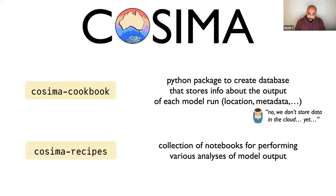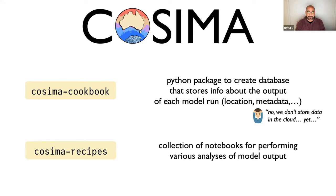The other tool we have is what we call COSIMA Recipes — a collection of notebooks that demonstrate various physical analyses you can do with the model outputs. This has evolved over time and has become a really useful library of examples. Nowadays, every new student or researcher joining the community uses it as their starting point and can get up to speed really quickly.